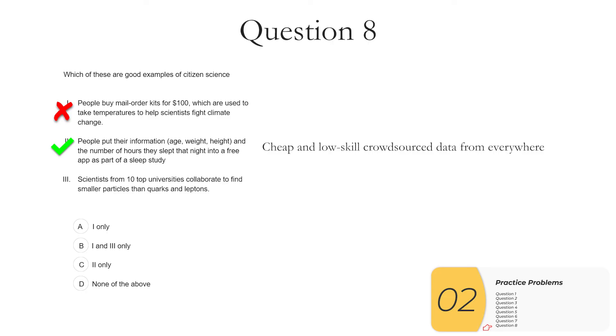Three, scientists from 10 top universities collaborate to find smaller particles than quarks and leptons. So this is collaboration, and the data is from everywhere, but it's not really citizens. Scientists are not citizens. The skill required to be part of this is too high. So this is not really an example of citizen science. So your answer here is C, two only.